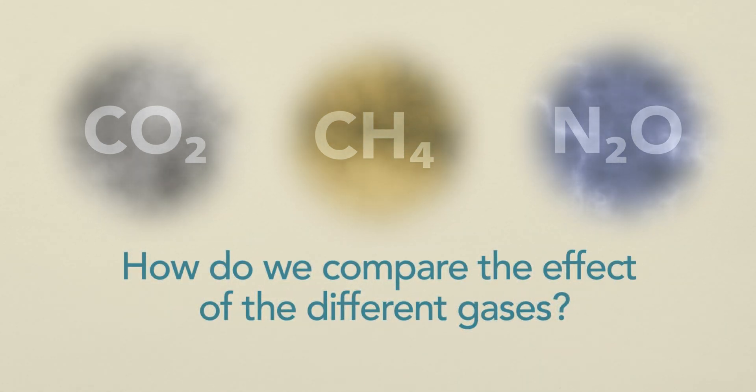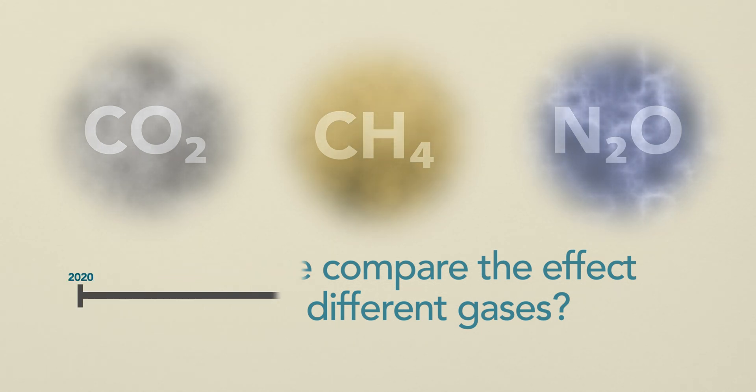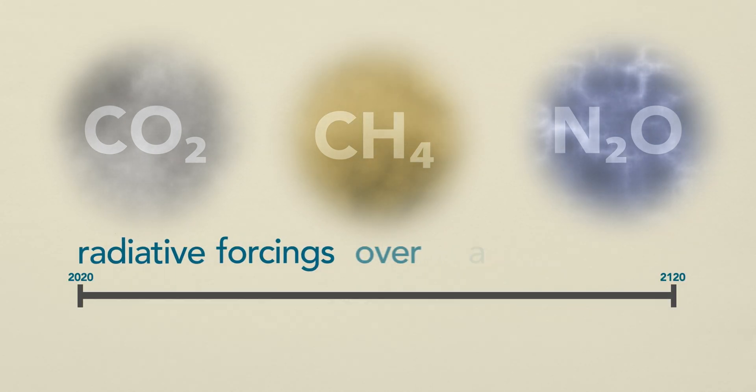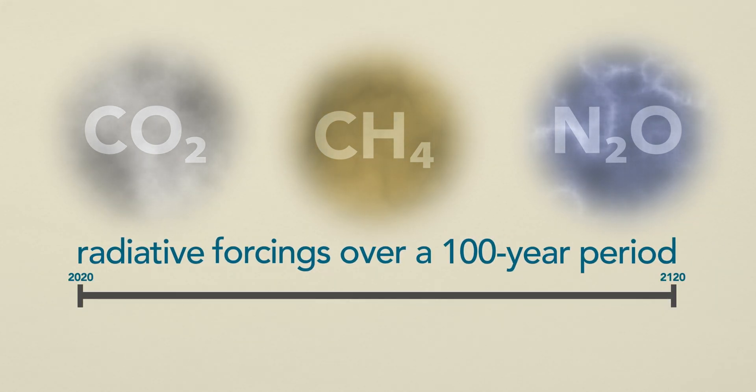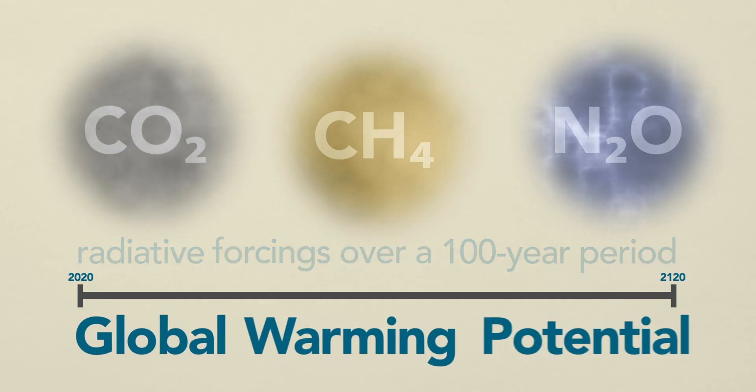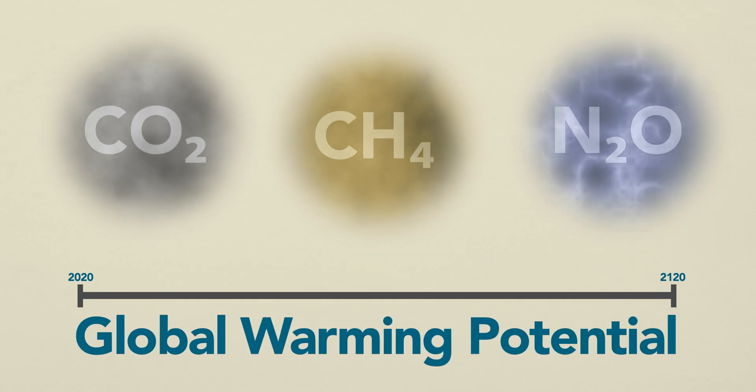So how do we compare the effect of the different gases? The science-based Intergovernmental Panel on Climate Change proposed to look at radiative forcings over a 100-year period. This metric is called global warming potential. The climate effect of different gases is compared with that of carbon dioxide and then expressed in CO2 equivalents. Methane has a global warming potential of 27 CO2 equivalents. Nitrous oxide of 273 CO2 equivalents.